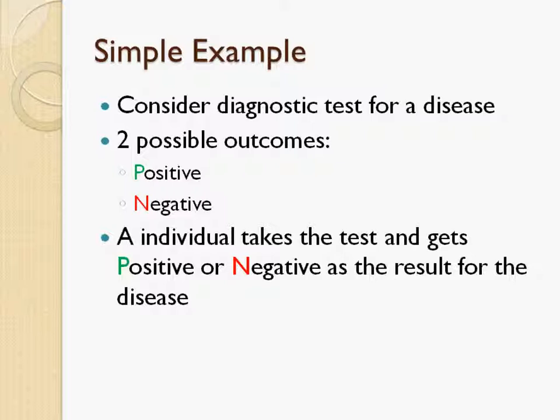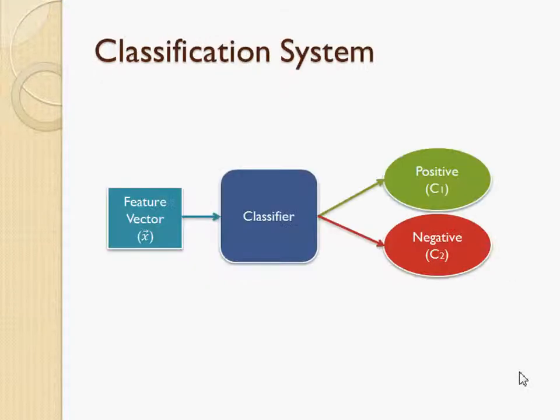Let me introduce how to derive this ROC concept from a very simple example. Consider a diagnostic test for disease — there are only two possible outcomes: positive and negative. A patient takes the test and gets either a positive or negative result. We can assume the testing process as a classifier, where the disease-related traits of a patient form a multidimensional feature vector. Since the result is either positive or negative, the testing process is basically a binary classifier system.